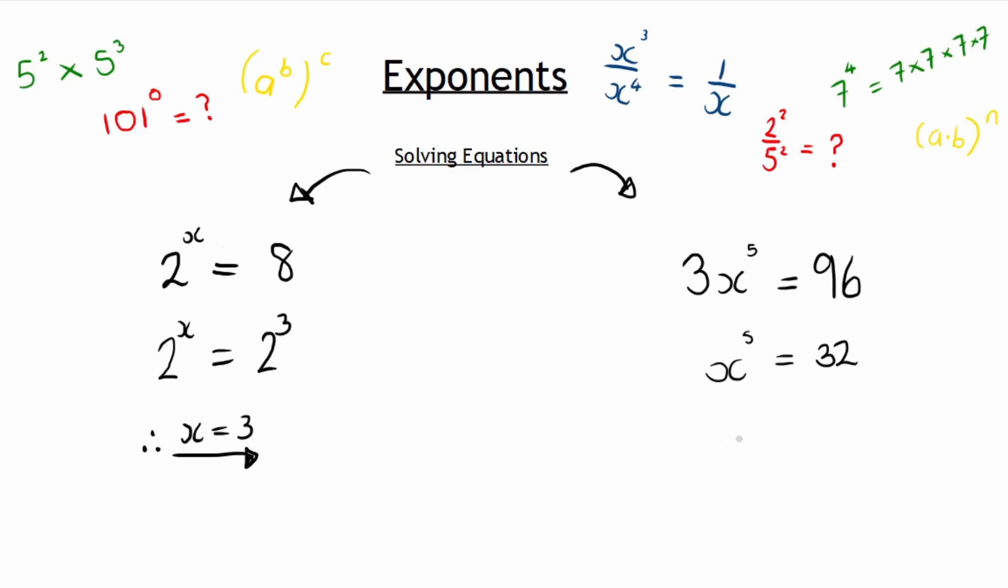And with some trying and testing or either using the factorial button on your calculator, you can also find that x to the power of 5 equals to here 32 can be written as 2 to the power of 5.